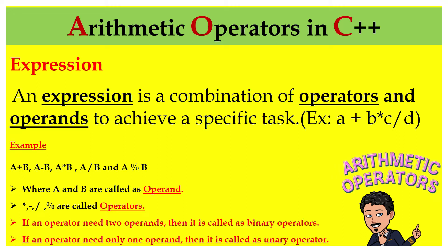If an operator needs two operands, then it is called as a binary operator. If that operator is in need of two operands, then we can call the operator as a binary operator. 'Bi' means two, and 'nary' means numbers. So if the operator wants to work, the operator is in need of two numbers or two operands — hence the name binary operator.